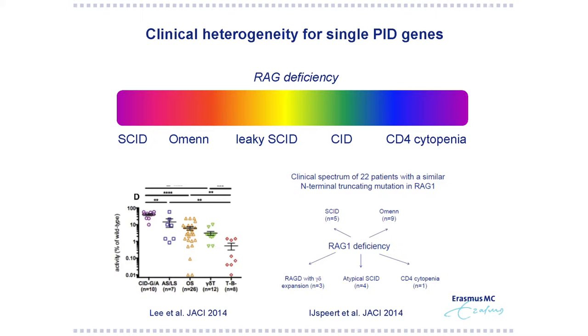It's also important to know that there's clinical heterogeneity, because if there's one PID gene mutated, it can give rise to a spectrum of different clinical phenotypes. As shown by Bobby Gasper, the RAG gene is known to give a broad spectrum of diseases, ranging from SCID, severe combined immunodeficiency, to Omenn syndrome, leaky SCID, CID, and even CD4 cytopenia.